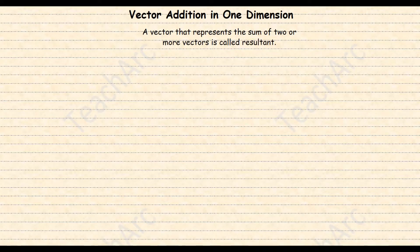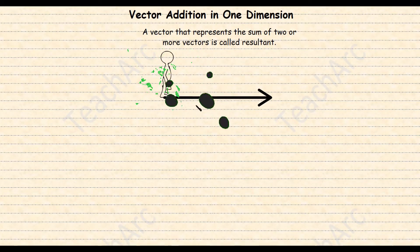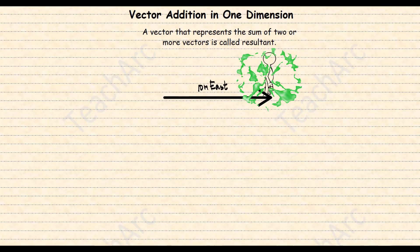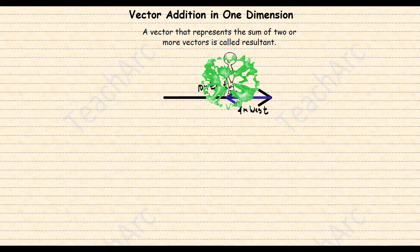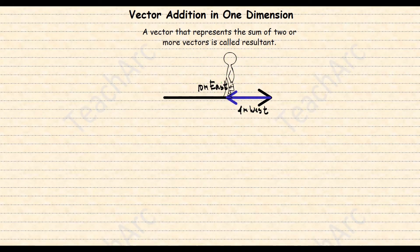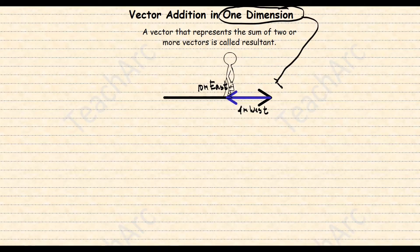The symbols of vector quantities are written with an arrow above, or sometimes with a partial arrow or a line, though in many cases these are being ignored. A vector that represents the sum of two or more vectors is called the resultant, represented by the capital letter R. Let's say a boy walked 10 meters to the east, then stopped and traveled back to the west for 4 meters. If we look at these two displacements and connect them together, we can say that both vectors lie on a straight line.